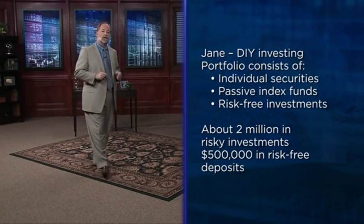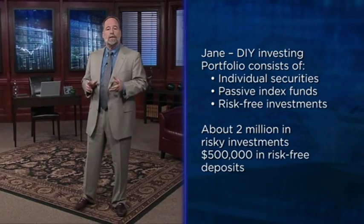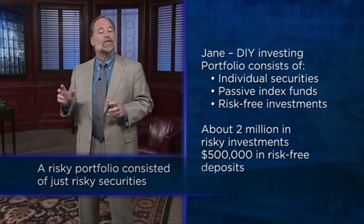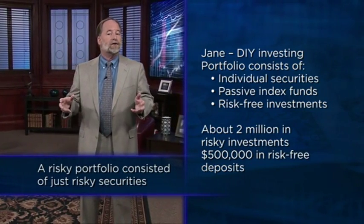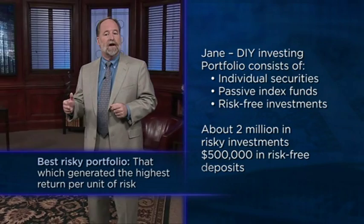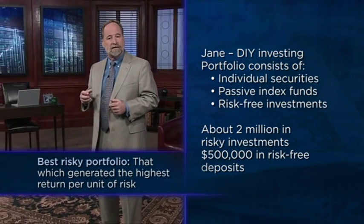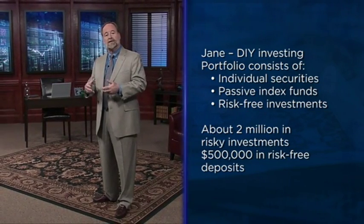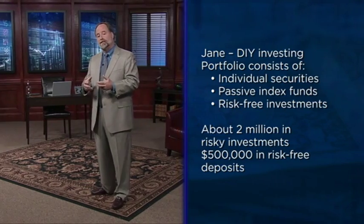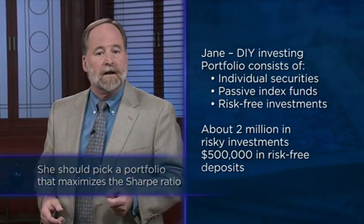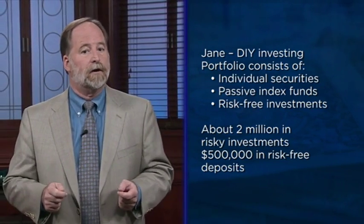Both Jane and Ichabod want to evaluate what they've done. Jane's problem is very similar to the typical investor's problem we analyzed when we looked at how to form an optimal risky portfolio in Lecture 15. Recall that a risky portfolio consisted of just risky securities, such as the passive index fund and the individual securities that Jane holds. The idea of Lecture 15 was to form the best risky portfolio — defined as that which generated the highest return per unit of risk. Given that optimal risky portfolio, the investor could control the amount of risk by deciding how much wealth to put into that risky portfolio and how much to keep safe. So in Jane's case, she should pick the portfolio that maximizes the Sharpe ratio. Thus, the appropriate evaluation criterion for Jane's risky portfolio is the Sharpe ratio.